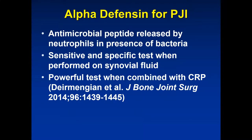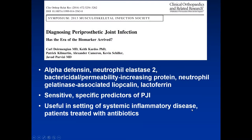One important new antimicrobial test available to help define periprosthetic joint infection is alpha-defensin, also known as Synovasure. This peptide can be detected in synovial fluid and is a fairly powerful predictor of periprosthetic joint infection. Multiple articles have described it as a sensitive and specific predictor. While it hasn't eliminated the pathologist's role in evaluating revision arthroplasty specimens, it can serve as an adjunct. It appears particularly useful in patients with systemic inflammatory disease such as rheumatoid arthritis, and in patients previously treated with antibiotics.